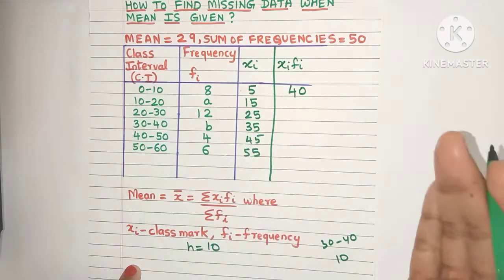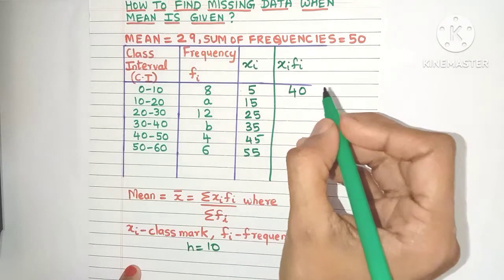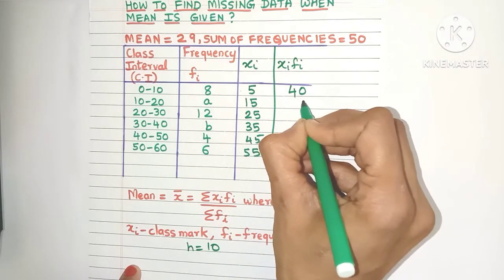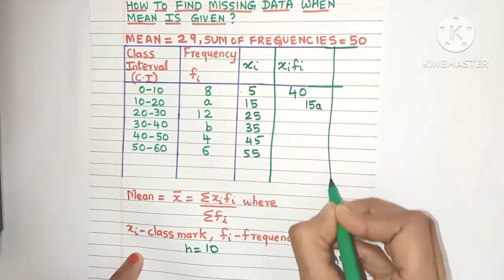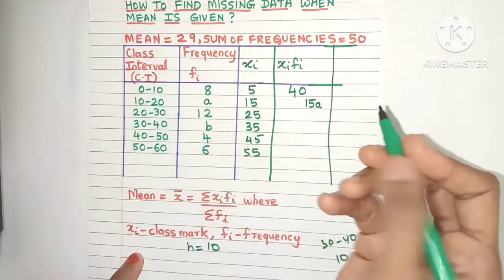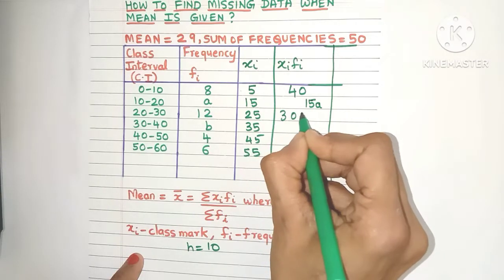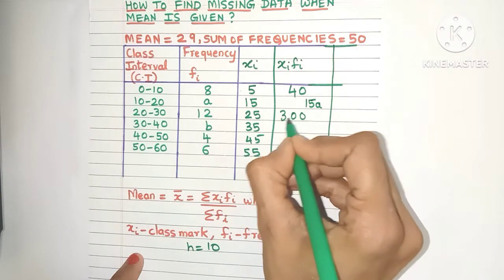Now 15 into a is 15a, which is a variable. So just write it to the side. I'll explain the reason later. Now 25 into 12 is 300. Write these numbers one below the other.